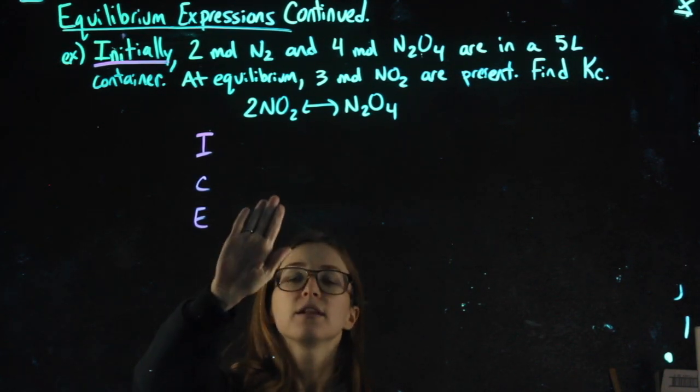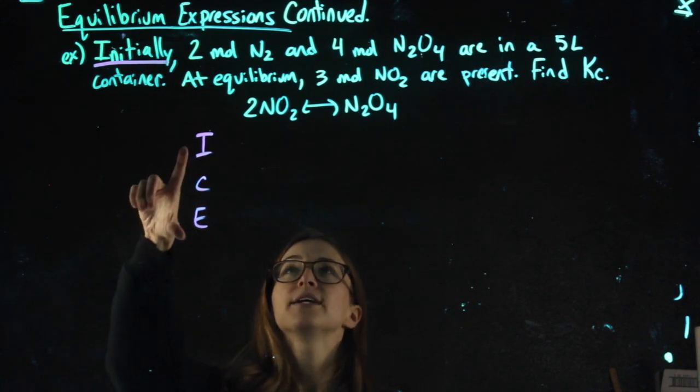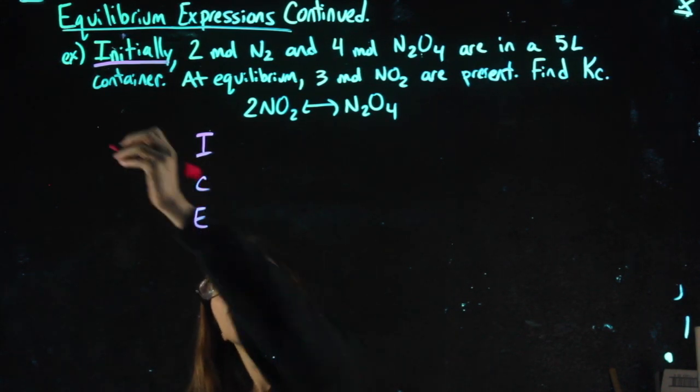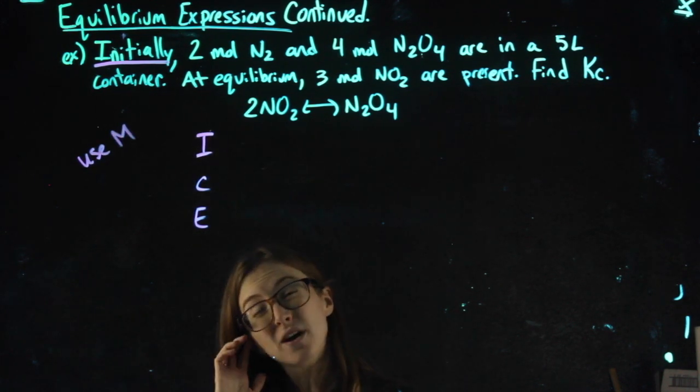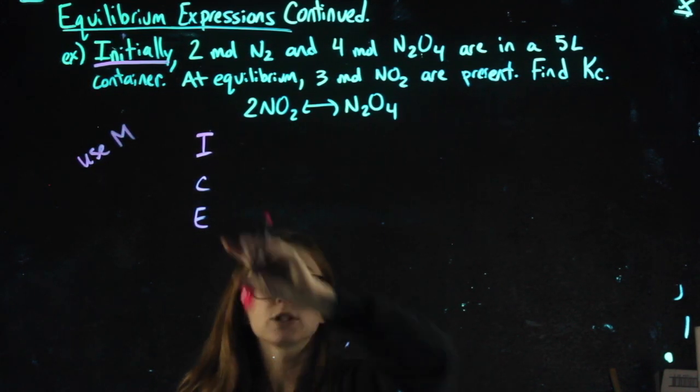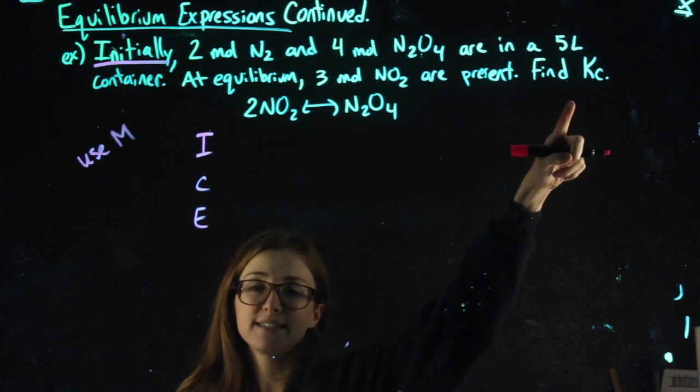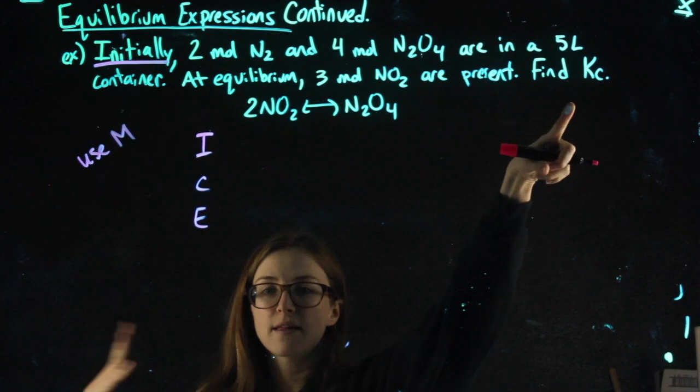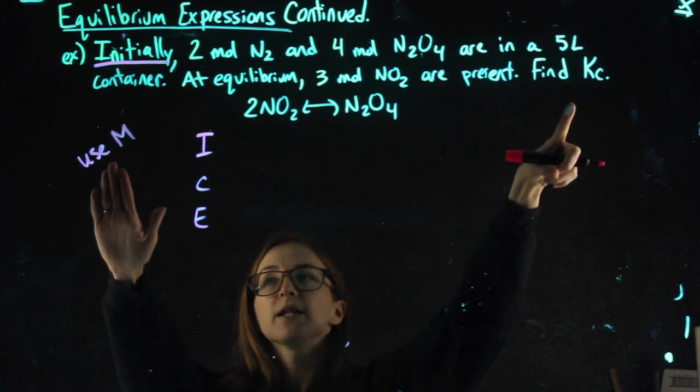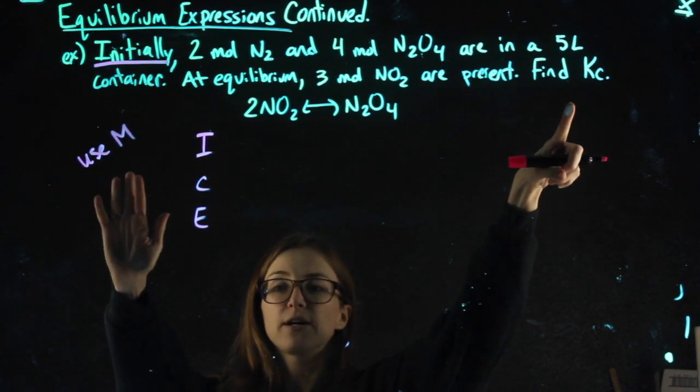Different from how you've done ICE charts in the past, when we do ICE charts with equilibrium, go ahead and use molarity rather than moles. They still work in moles, but then by the time you're done with the ICE chart, I'm going to find KC. A lot of students forget to get all the way to molarity and then they get it wrong. So use molarity in your whole ICE chart to simplify your life.